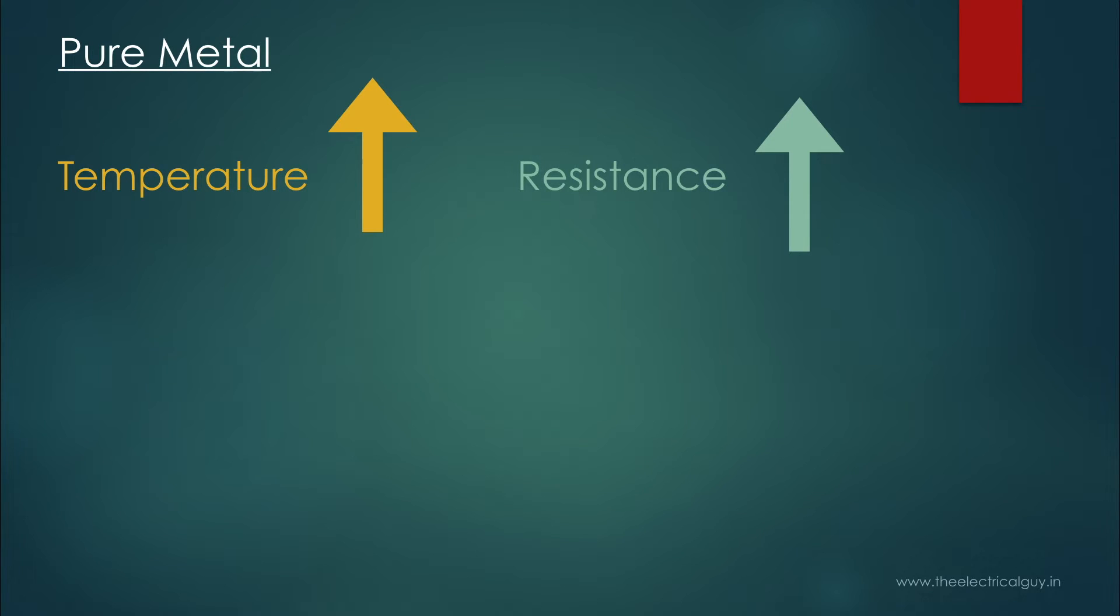Why this happens? Well it is like that, it is the property of that material. Now the material responded to the increase in temperature positively with increase in resistance. We call such material to have positive temperature coefficient of resistance. So if we draw a graph of temperature and resistance for such material it will look like this.